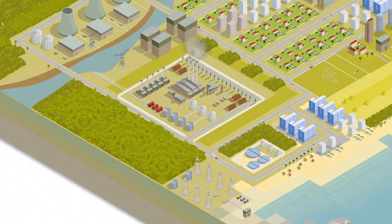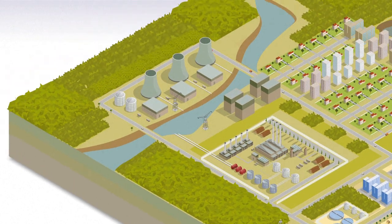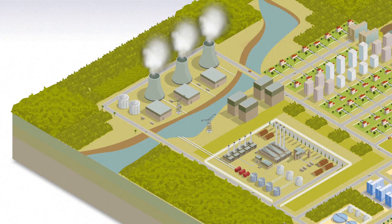Droughts can also disrupt water-intensive industrial activities. The paper industry, for example, requires large amounts of water for production, while nuclear plants need water for cooling.